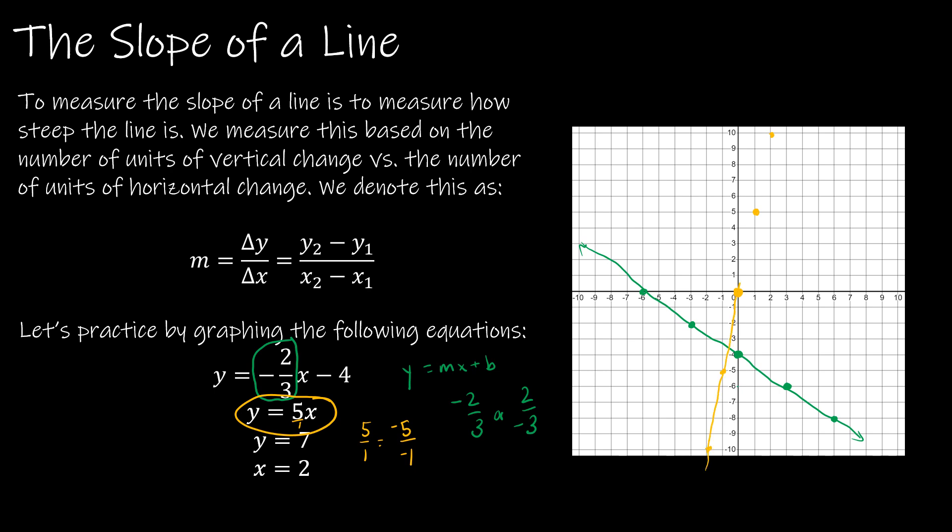I threw those other two in here just for fun so that we can remember what happens when we don't have a slope. There's zero slope and there's undefined slope. Let's look at y equals 7. y equals 7 is everywhere where y is equal to 7. I want you to think of y equals 7 as y equals 0x plus 7. So this is a zero slope. m is equal to zero. And a zero slope is just going to be a horizontal line.